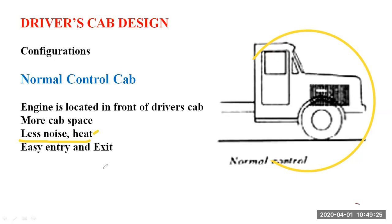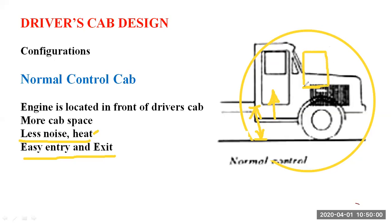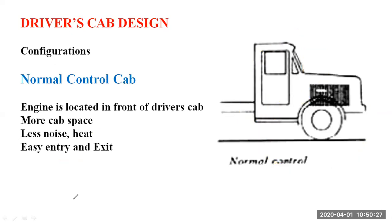You might also have a co-driver seat in the same cabin, which is generally free to be occupied by passengers. Another important advantage of this type of cabin design is easy entry and exit — the entry and exit points have been shown in the slide. In a forward control cab, the entry point for the driver might be quite a bit higher, requiring the driver to put one foot at one location and then the second foot higher up to climb into the vehicle, which is quite a tedious job. This can be avoided with the normal control type of cab.